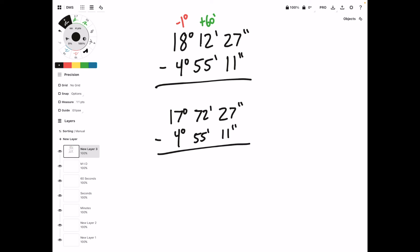Now that all the numbers on top are larger than all the numbers on bottom, we can start subtracting. So this is going to give us 16 seconds, it's going to give us 17 minutes, and 13 degrees. This is our final answer.